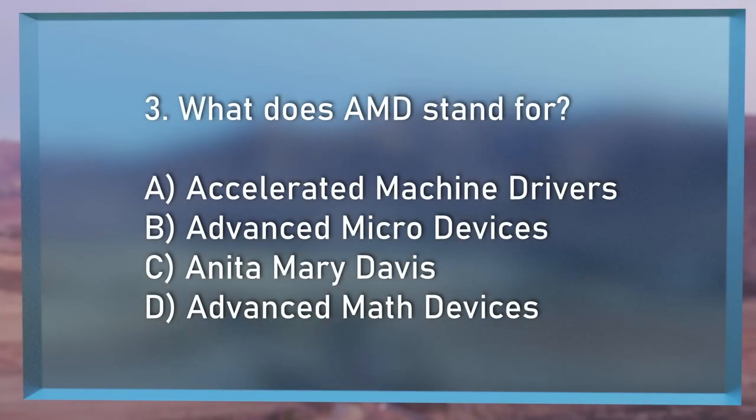Question number 2: Where is Silicon Valley? Is it A, in Perth, Western Australia; B, Southern San Francisco Bay Area; C, between the Silicon Hills; or D, Northern Long Island Area? Question number 3: What does AMD stand for? The chip manufacturer — is it A, Accelerated Machine Drivers; B, Advanced Micro Devices; C, Anita Mary Davis; or D, Advanced Maths Devices?